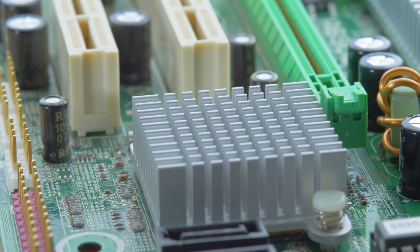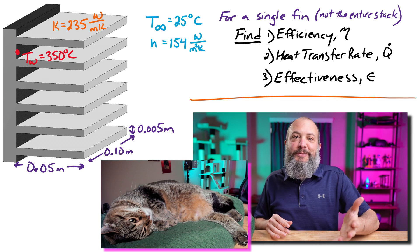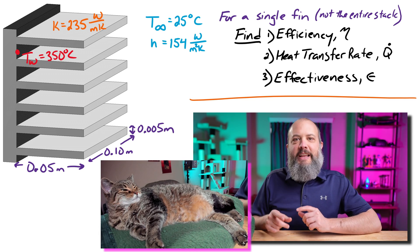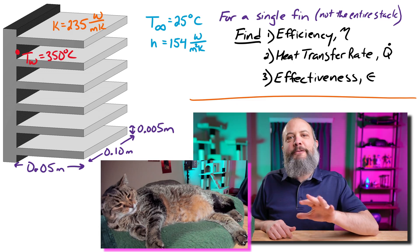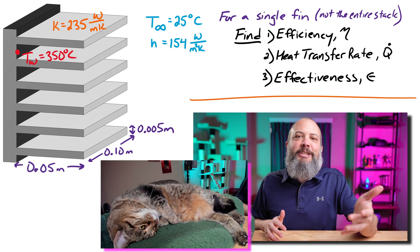The purpose of a fin, this is an extended surface, is to get more heat transferred than your system would have without the fin. So fin efficiency and fin effectiveness are two different ways to measure the efficiency and effectiveness of fins as compared to how the system could behave in more ideal situations.